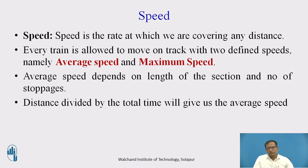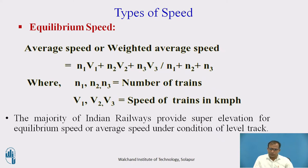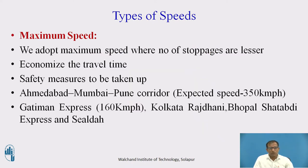Average speed is calculated as distance divided by total time. In previous sessions, we also learned that the weighted average speed is calculated as N1V1 plus N2V2 — taking the weighted average of all vehicles traveling at different speeds. After average speed, the next speed type is maximum speed.